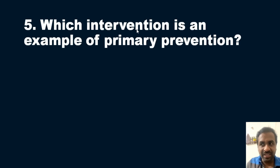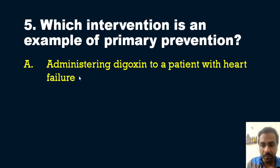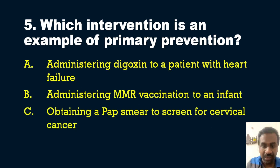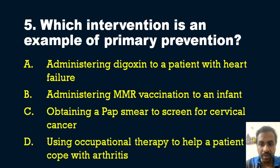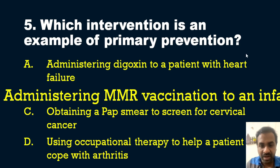Question five: Which intervention is an example of primary prevention? Options: A) Administering digoxin to a patient with heart failure, B) Administering MMR vaccination to an infant, C) Obtaining a pap smear to screen for cervical cancer, D) Using occupational therapy to help a patient cope with arthritis. The answer is option B — administering MMR vaccination to an infant.